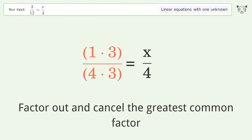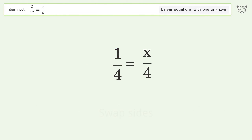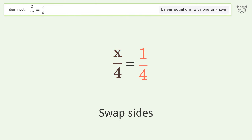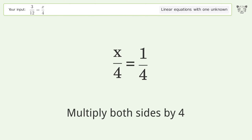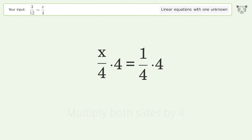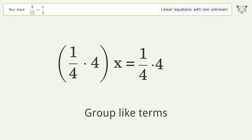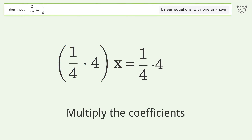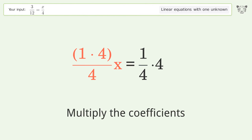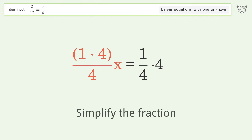Swap sides, isolate the x, multiply both sides by four, group like terms, multiply the coefficients, and simplify the fraction.